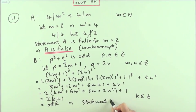So that's in the form of 2 times something plus 1, where that k is obviously an integer, which is odd. In which case, we've got statement B is true.